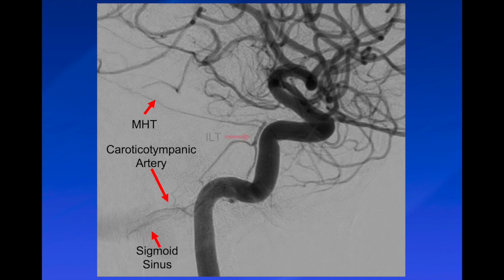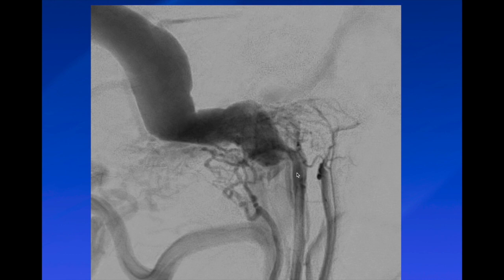The MHT and ILT are also converging on the site of the fistula. On the external carotid artery injection, we see ascending pharyngeal artery supply to the dural arteriovenous fistula as well as the posterior auricular artery. These branches converge at the same location as the caroticotympanic branch and ILT. When performing liquid embolic agent embolization with Onyx, one must be careful not to inject under high pressure and force embolic material into these tiny ICA branches, which could result in anterior circulation ischemia.